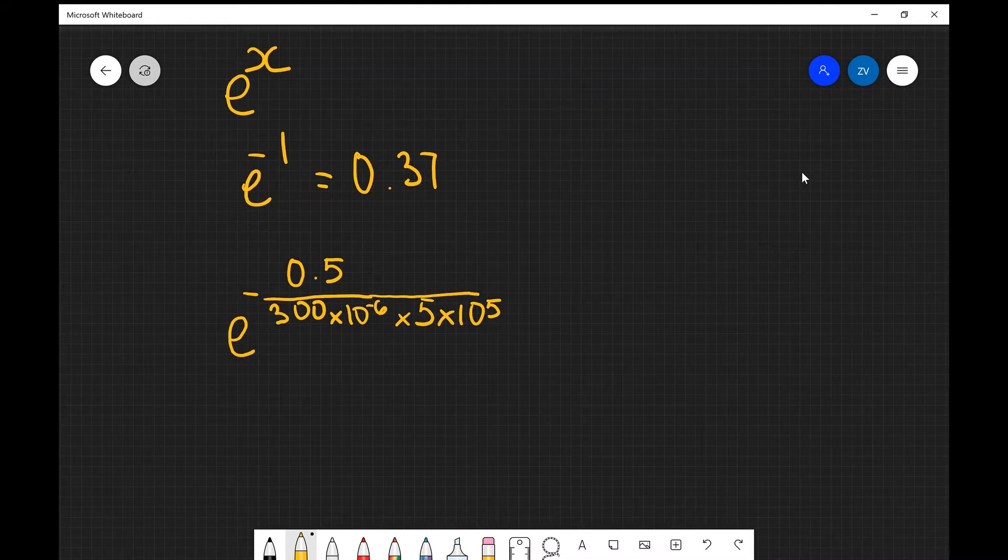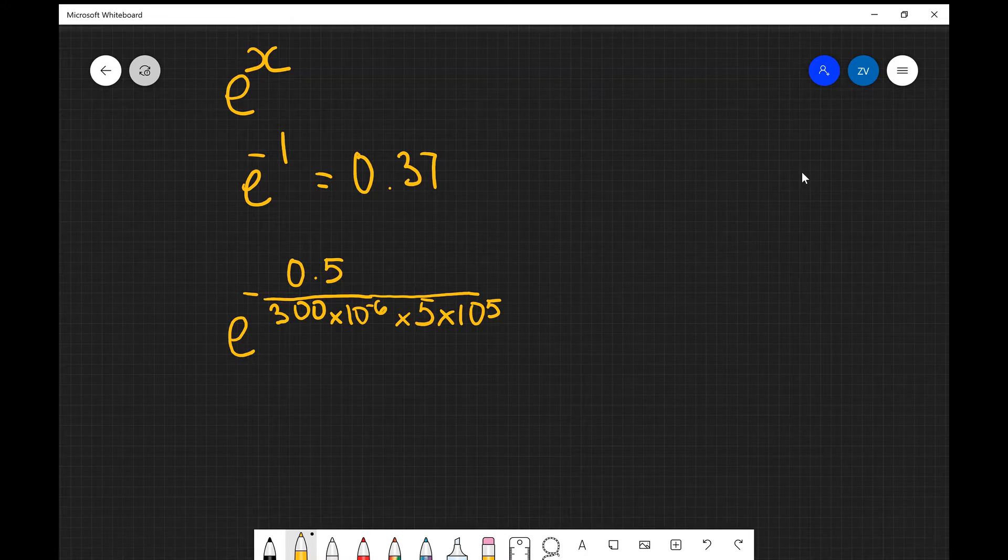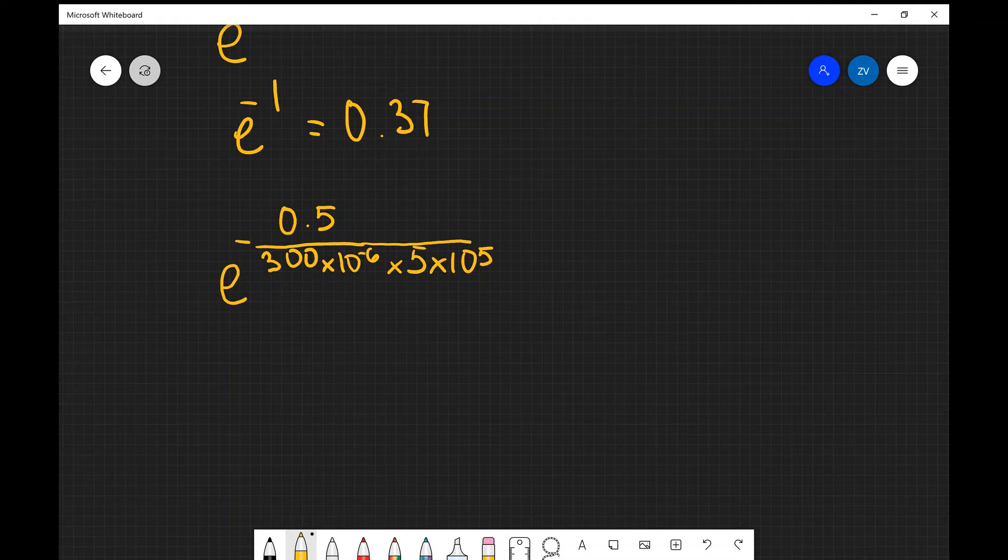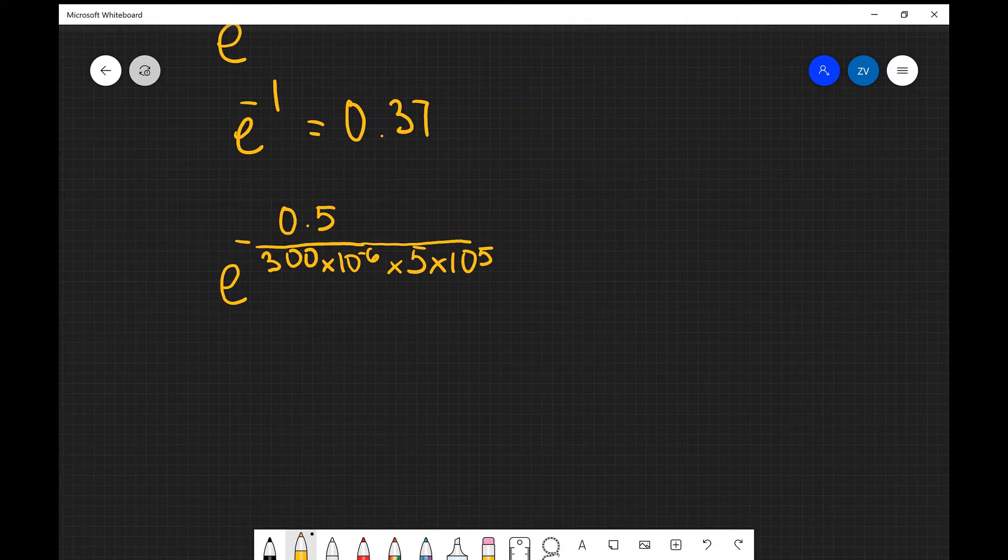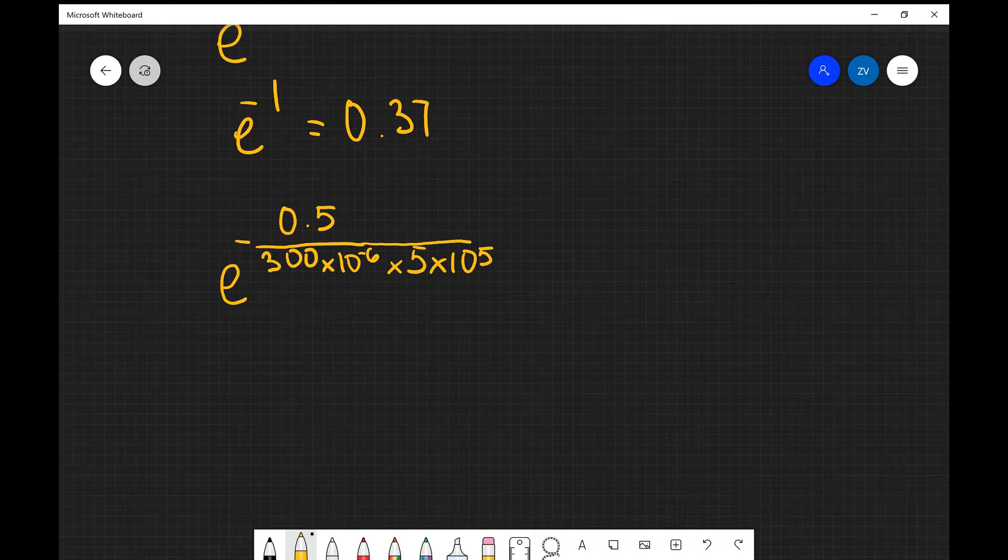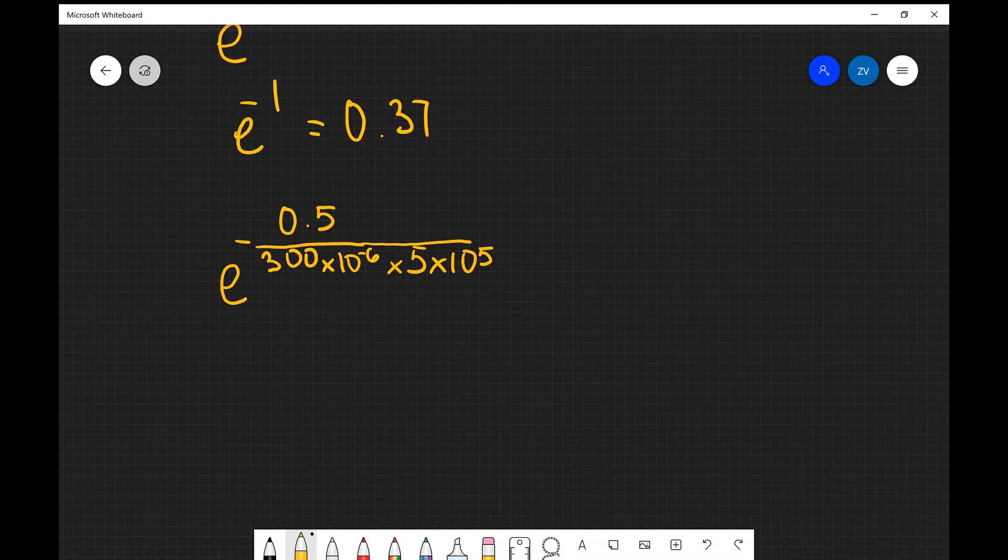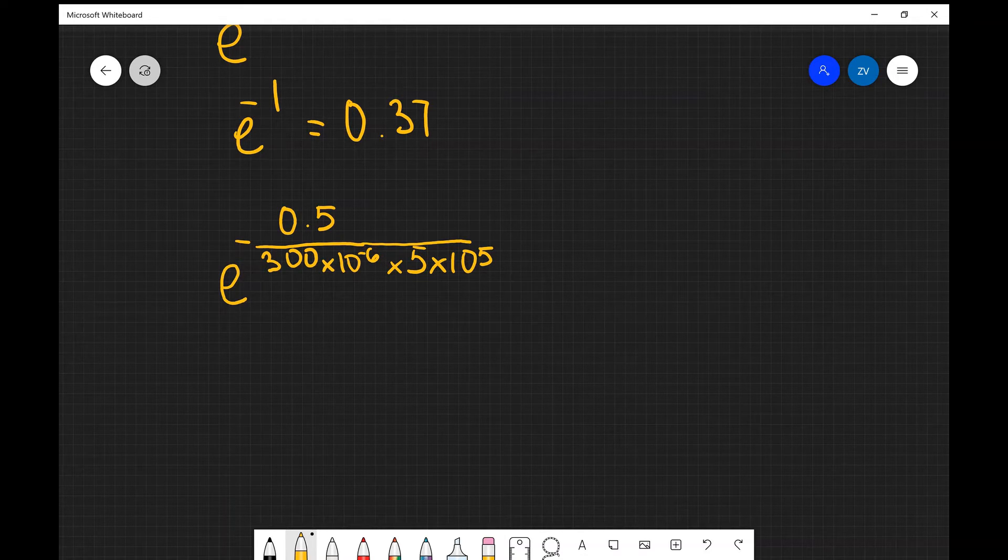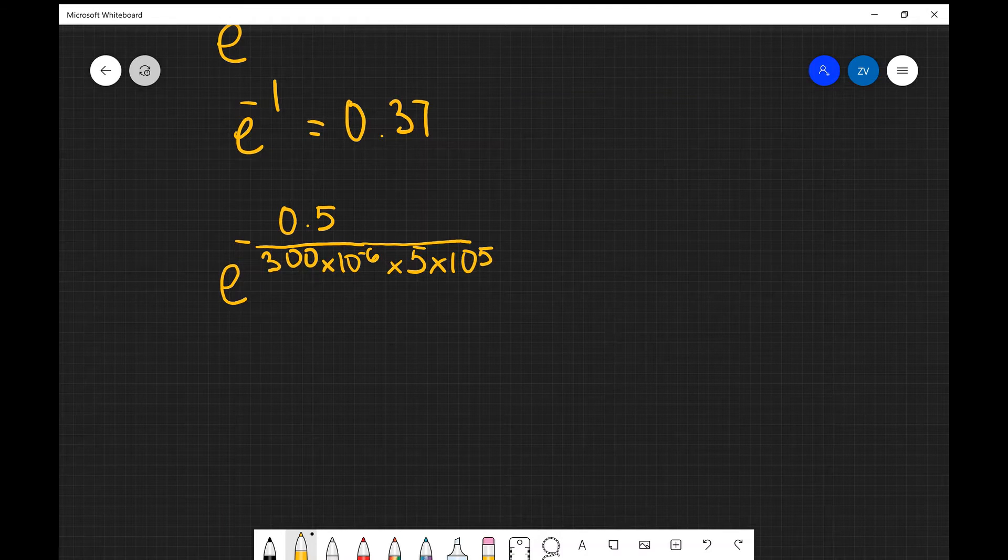Let's do another practice one. What I want you to input into your calculator is e to the power of minus 0.5 divided by 300 times 10 to the power of minus 6 multiplied by 5 times 10 to the power of 5. You need to be quite careful in putting that; you could either use brackets or the fraction function of your calculator.